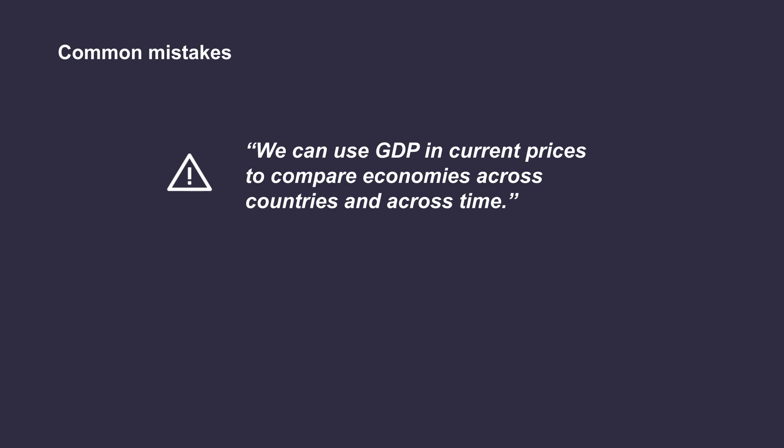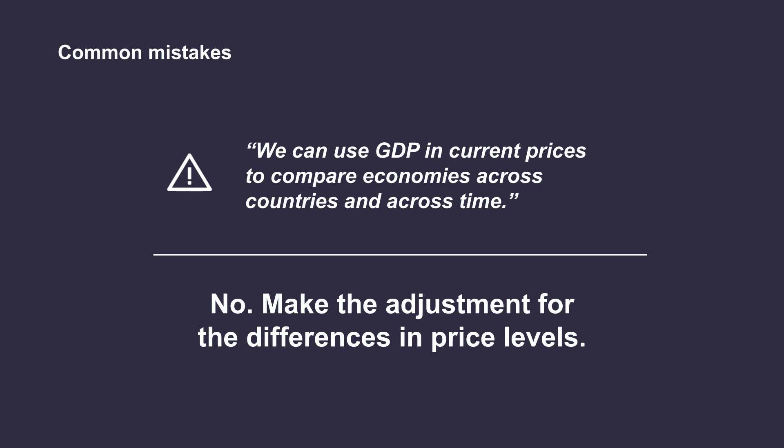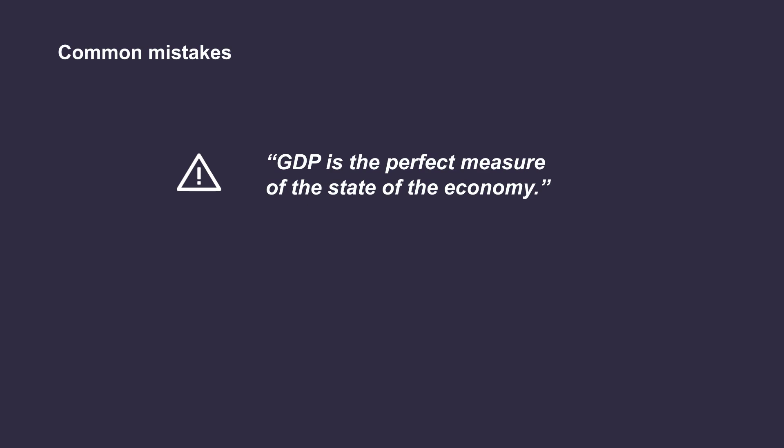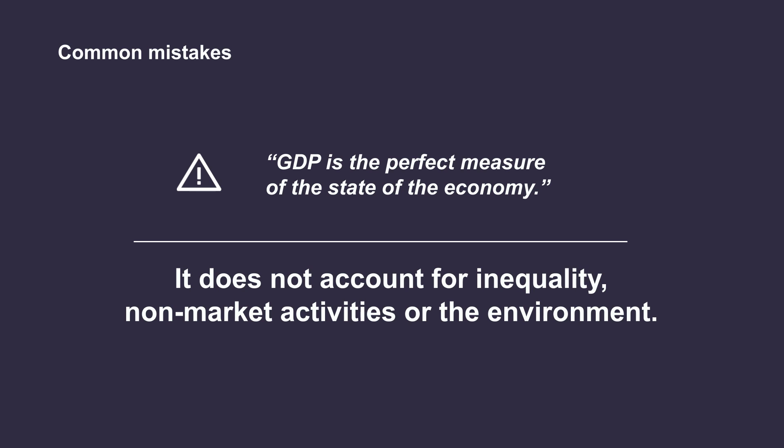Let's have a look at a couple of common mistakes about GDP. The first one is that we can use GDP in current prices to compare economies across countries and across time. This is not correct. To make the comparison, we should make the adjustment for the differences in price levels. Another mistake is thinking that GDP is a perfect measure. GDP is a very useful metric, but it also has a list of drawbacks. In fact, Robert Kennedy once said that GDP measures everything except that which makes life worthwhile.